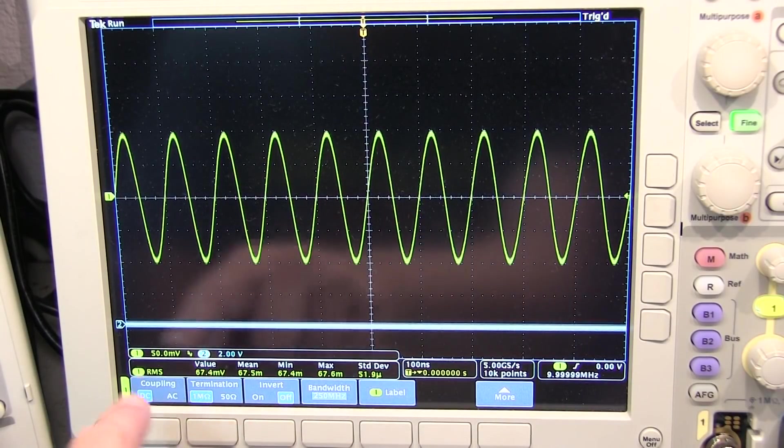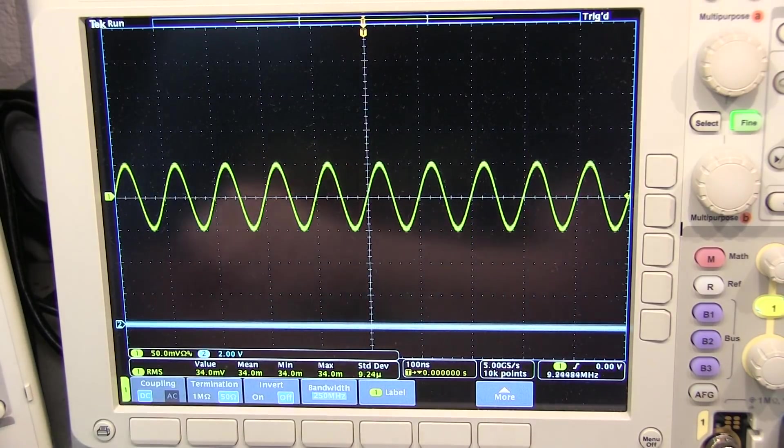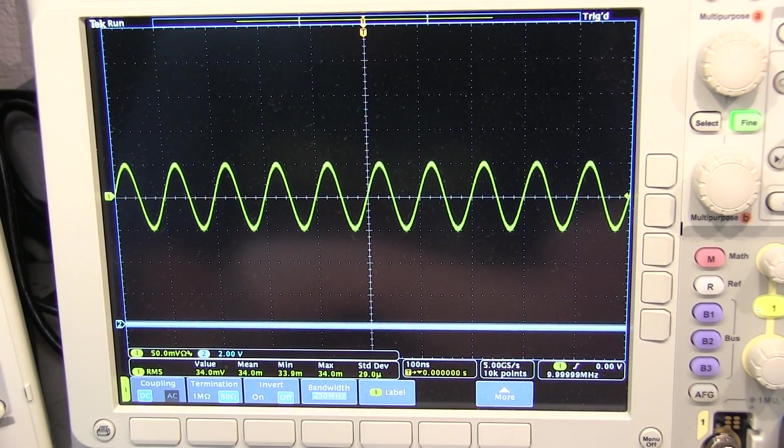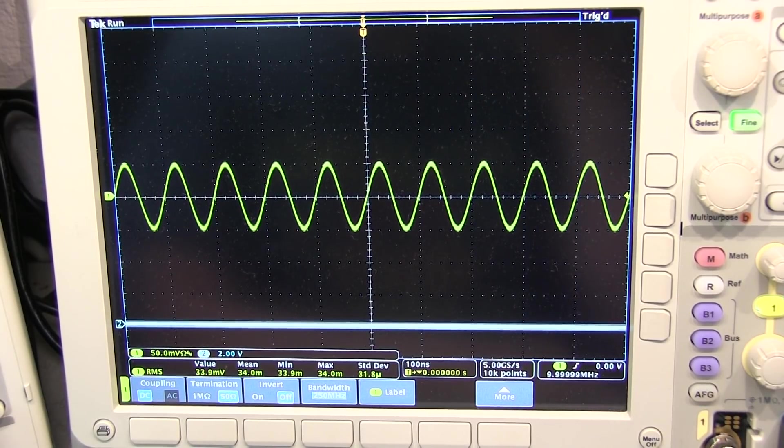So we can see that if we present the generator with a 50 ohm load, the signal should be right there at 100 millivolts peak-to-peak. So let's take that same signal and apply it to the input of the amplifier and see what the amplitude looks like.